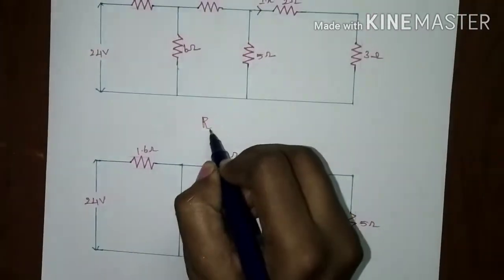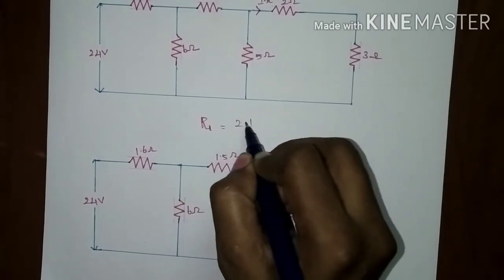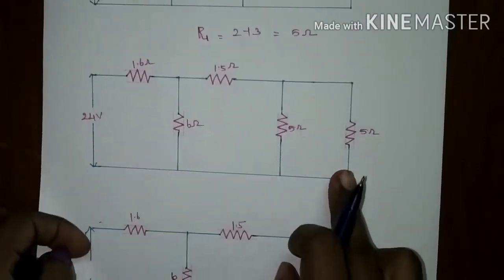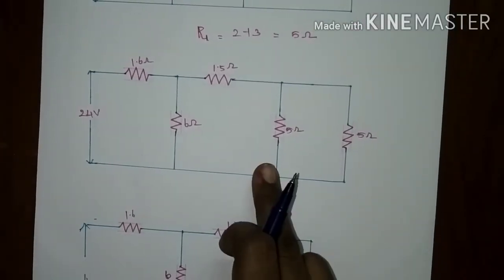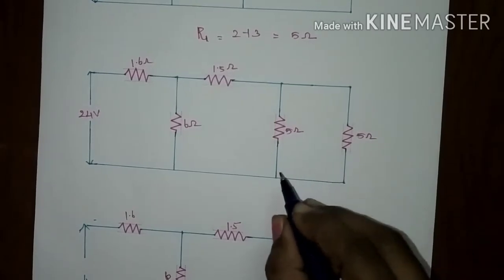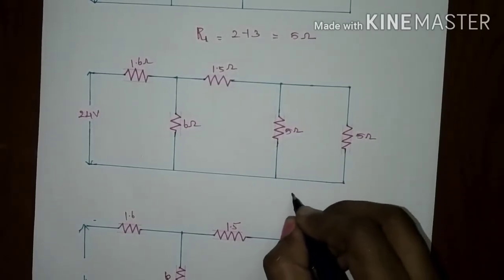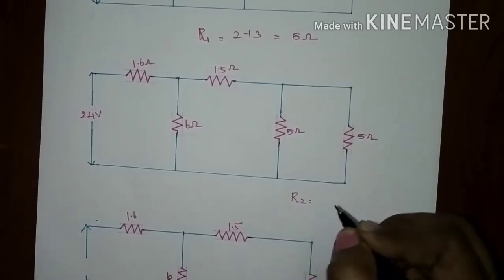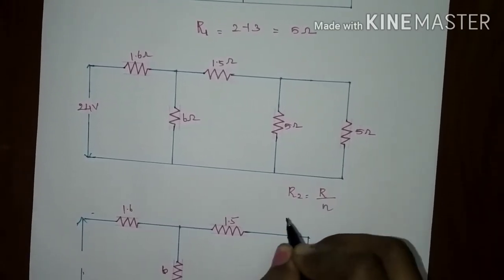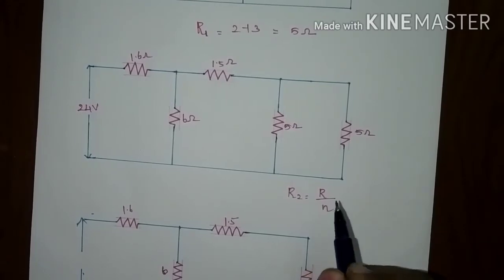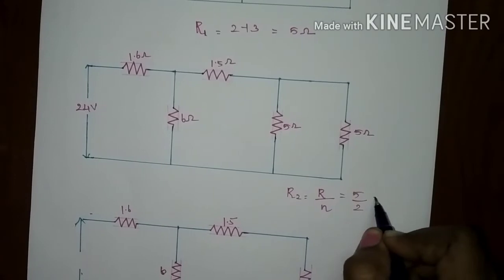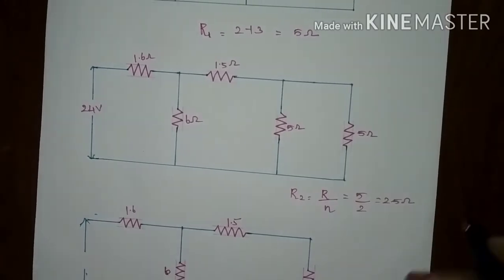R1 can be found as 2 plus 3 in series, giving 5 ohms. Now, 5 ohms and 5 ohms are in parallel. If identical resistors are connected in parallel, then R equivalent can be found as R divided by N. R2 equivalent is R divided by N, where N is the number of connections, which is 2. So 5 divided by 2 gives 2.5 ohms.